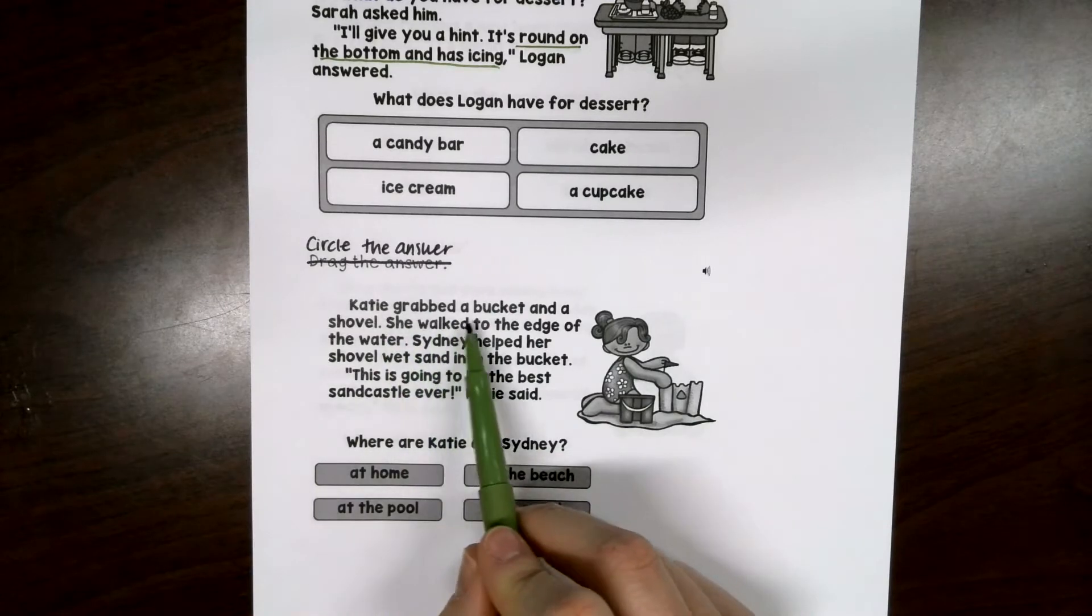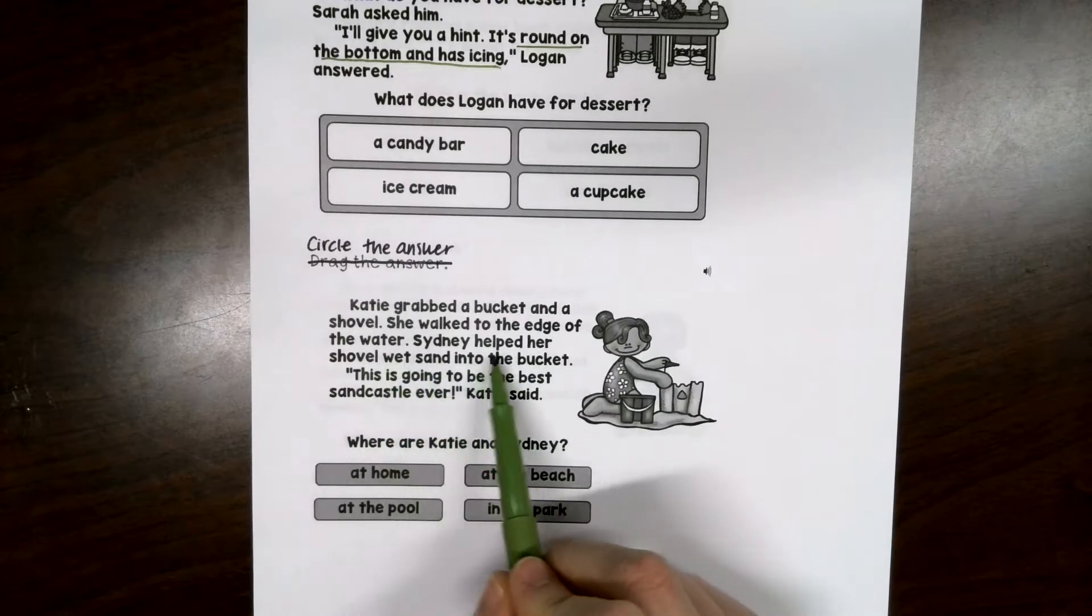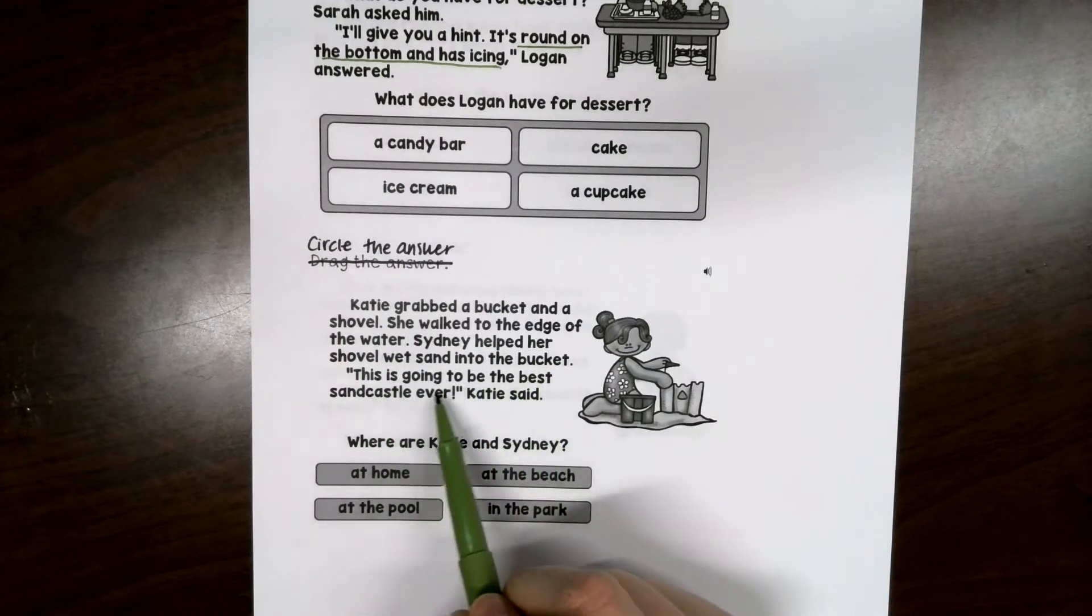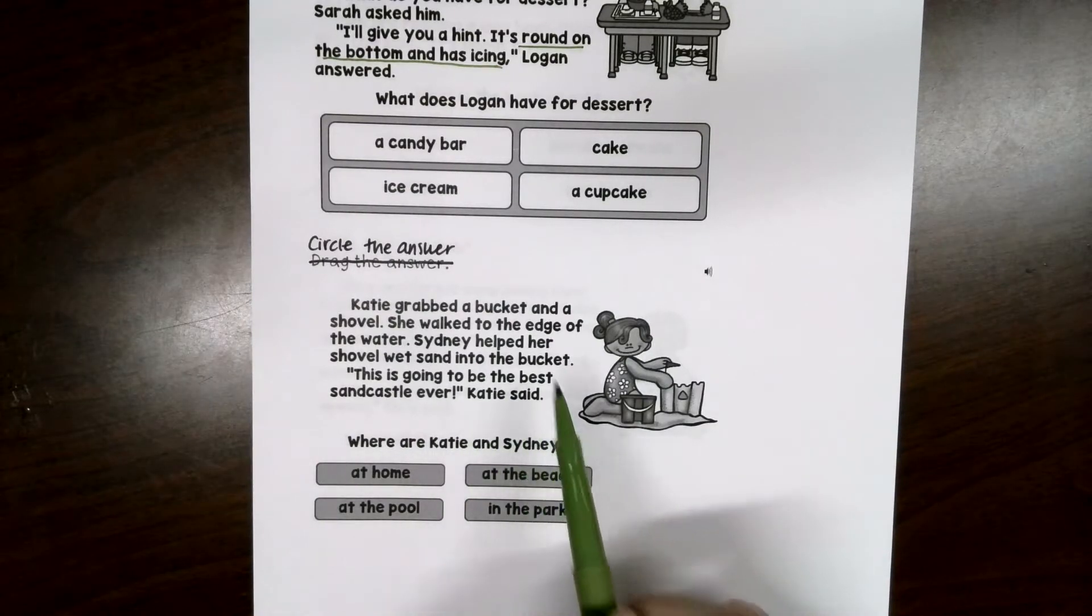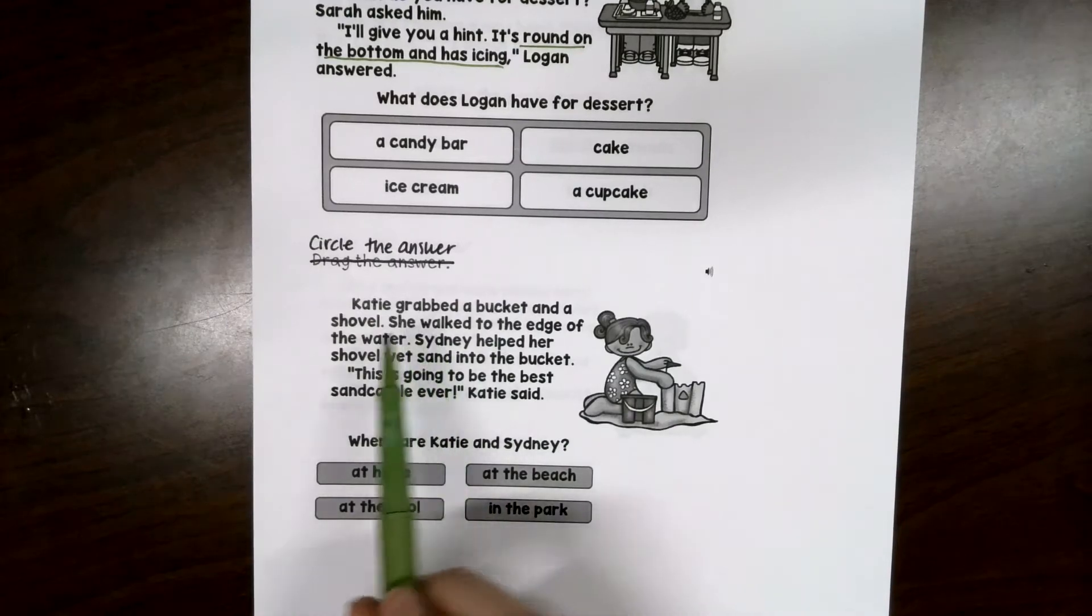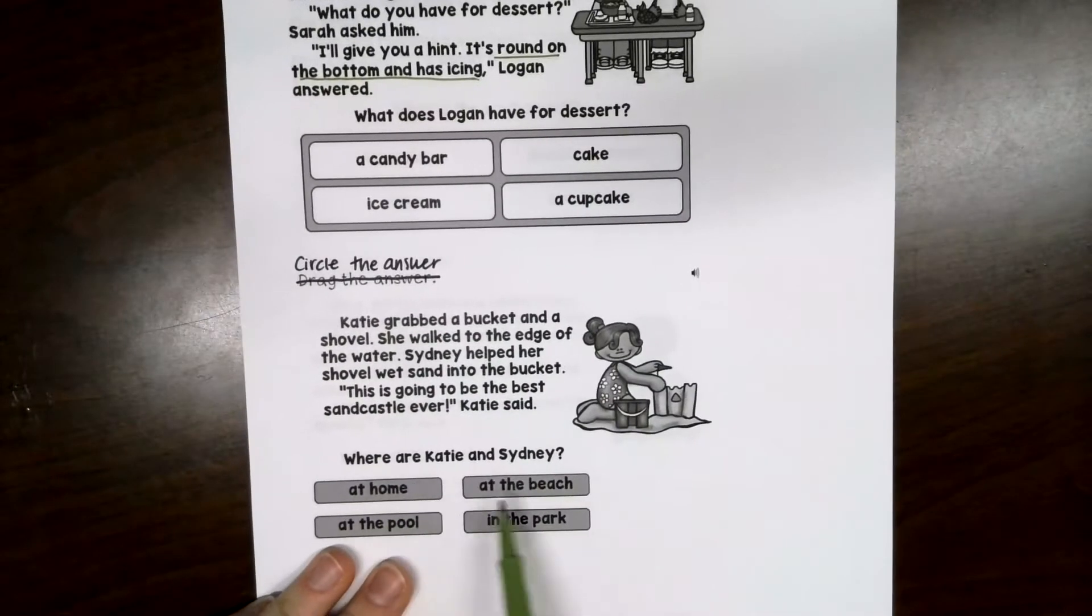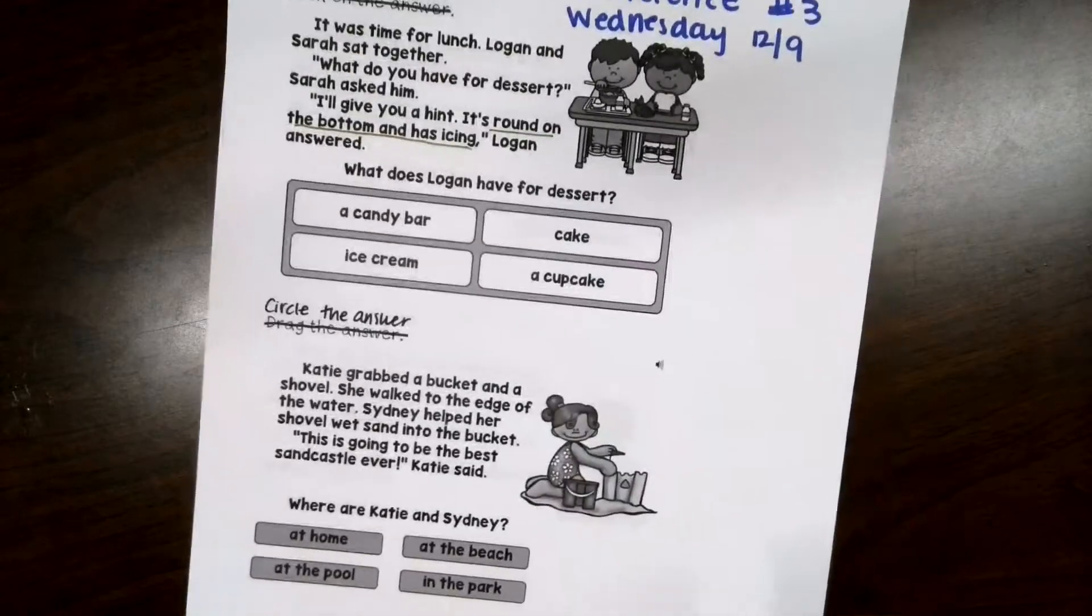Katie grabbed a bucket and a shovel. She walked to the edge of the water. Sydney helped her shovel wet sand into the bucket. This is going to be the best sandcastle ever, Katie said. Where are Katie and Sydney? Are they at home? At the beach? At the pool? In the park? So, if you guessed, they have a bucket. They're building a sandcastle. Where do you think they are? Home, the beach, a pool, or the park?